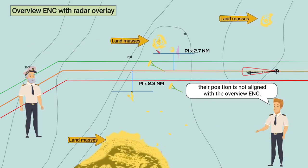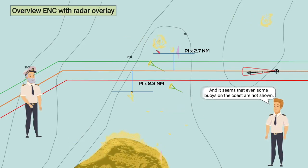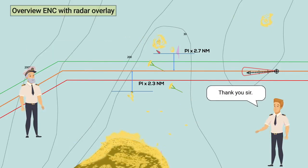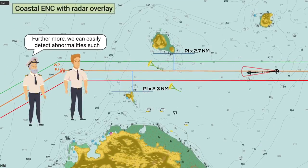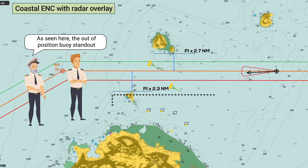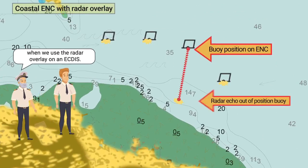Their position is not aligned with the overview ENC, and it seems even some buoys on the coast are not shown. That is correct — very well observed, Third. Thank you, sir. Furthermore, we can easily detect abnormalities such as out-of-position buoys, as seen here. The out-of-position buoys stand out when we use the radar overlay on an ECDIS.